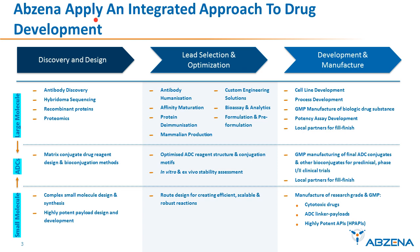At Abzina, we apply an integrated approach to drug development tailored to the type of drug candidate that we are developing, and we support development from discovery and design through lead selection, optimization, and into GMP manufacture. We cover large molecules in the form of recombinant antibodies and recombinant proteins, small molecules in the form of complex synthetic compounds, and the combination of these for bioconjugate drug design and development. This extensive range of expertise and capabilities allows us to develop a broad range of drug types and designs, and the complexity of some of the new and emerging therapeutics really emphasizes the importance of developability assessment.